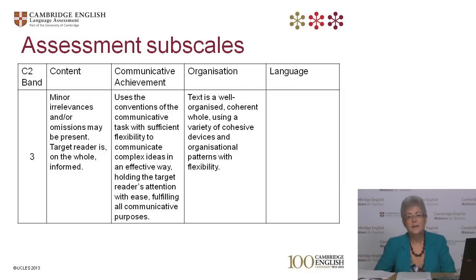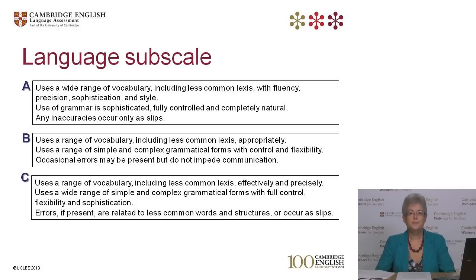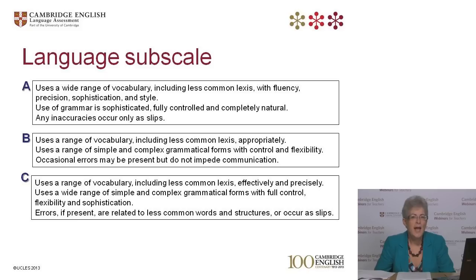Now let's have a look at the descriptors for the Language sub-scale. Three descriptors are shown — one for Band 5, one for Band 3, and one for Band 1. Read them closely and notice how different adverbs and adjectives are used to differentiate between the bands, and see if you can decide which descriptor belongs to which band.